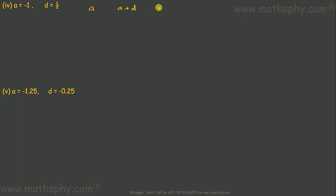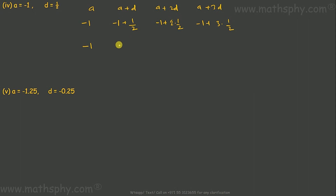So the terms are: first term 4, second term 1, third term negative 2, fourth term negative 5. This one: A, A plus D, A plus 2D, A plus 3D. A is negative 1. A plus D: negative 1 plus 1 over 2. Negative 1 plus 2 into 1 over 2. Negative 1 plus 3 into 1 over 2. So: negative 1, negative 1 over 2, 0, and positive 1 over 2.